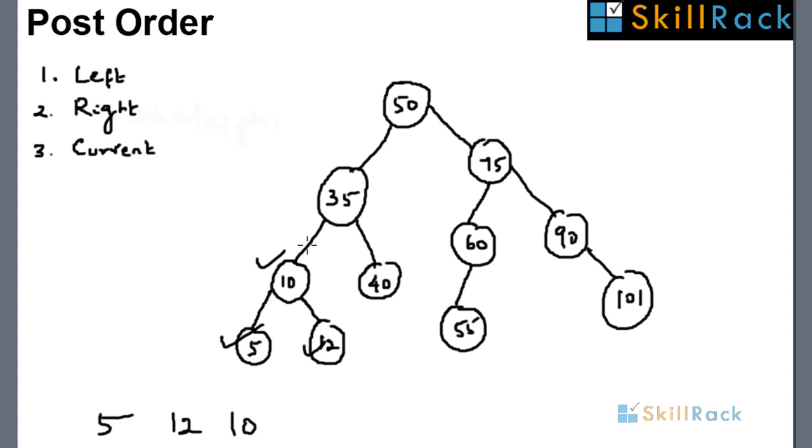Now this is printed. Next we come to 35, but 35 has a right part which is 40. So the node value 40 is printed, and then we print 35.